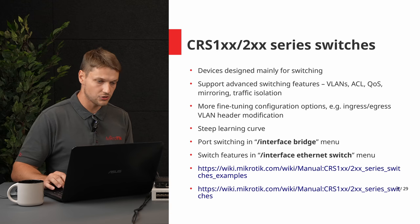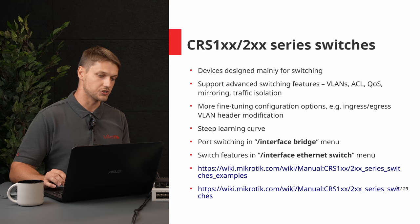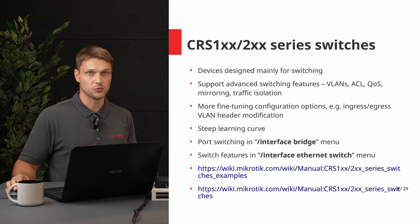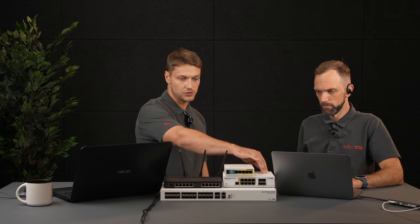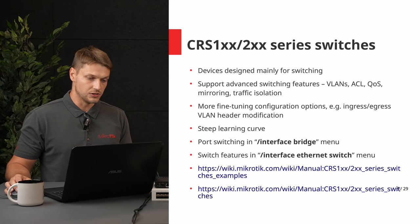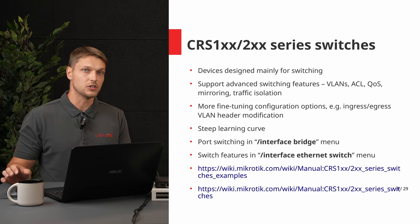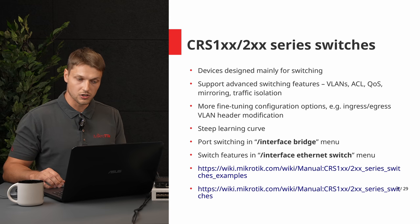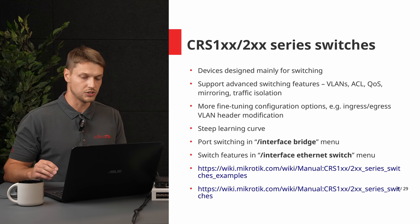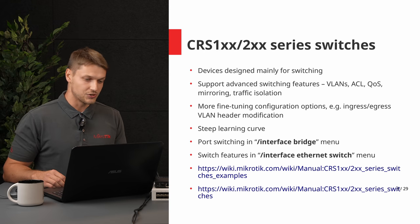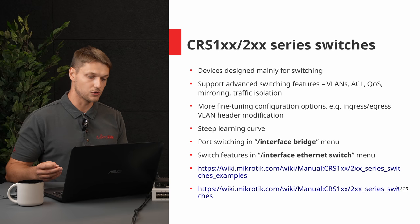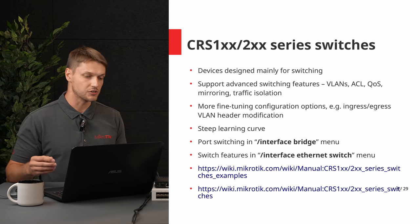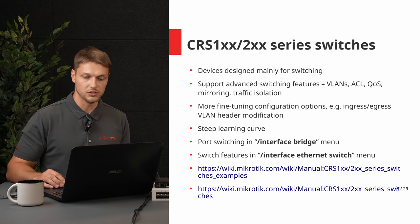The next category is CRS 100 and 200 series. These devices are designed mainly for switching, like the CRS112. They support advanced features like VLANs, ACL, quality of service, mirroring, and traffic isolation, and you get more fine-tuning configuration options — for example, you can modify VLAN headers on ingress and egress ports. However, these switches can be difficult to configure because of all the available switching options. Port switching is available in the bridge menu and all switch features are in the switch menu.